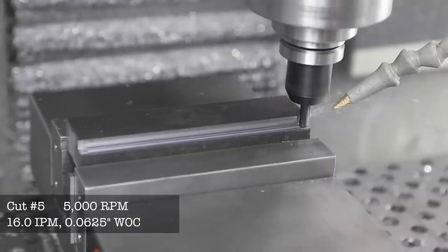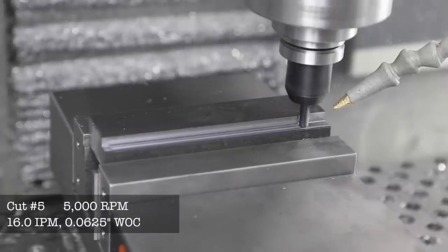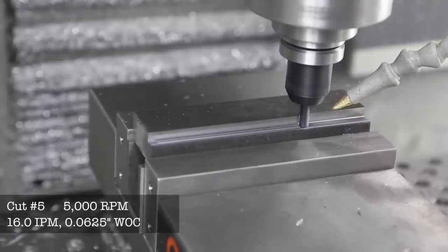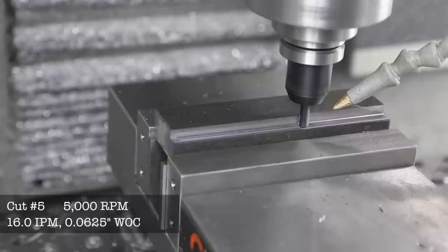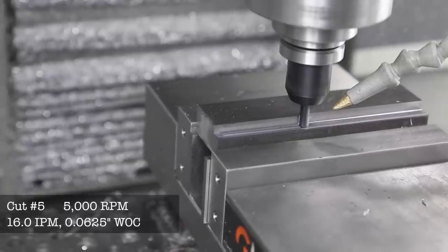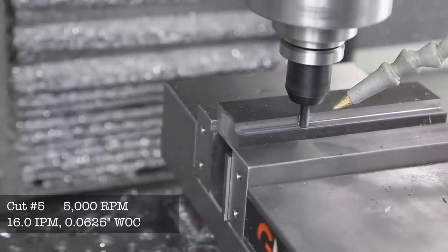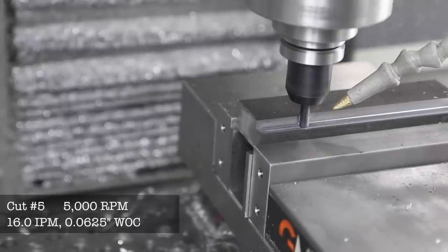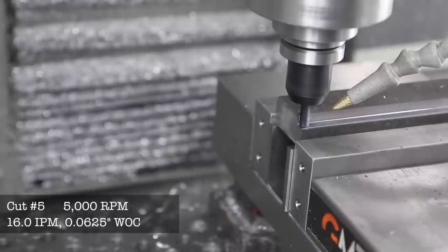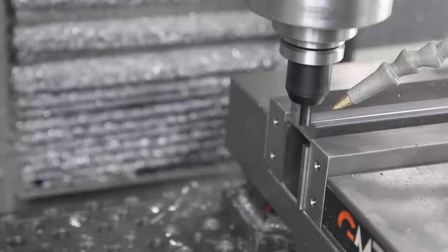5,000 RPM, 16 inches a minute. The big difference here is surface feet per minute. We're up around 330 versus about 200 when we were using G Wizard. Honestly I don't see any huge difference. It's a crazy different cut in terms of RPMs and speed, but the cut is still great and the chips are still good.